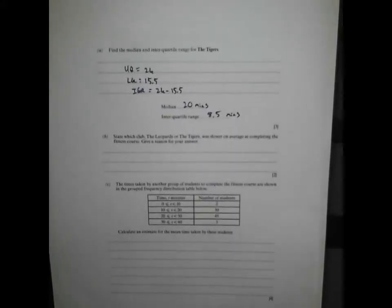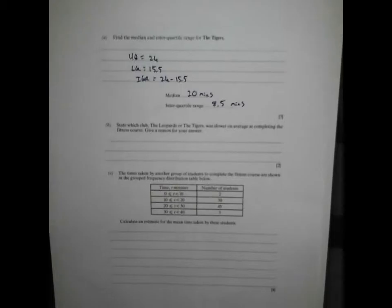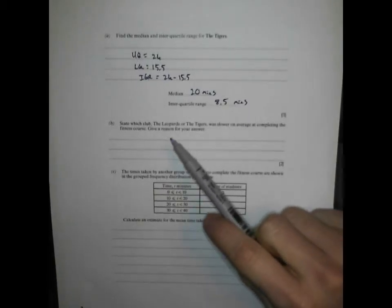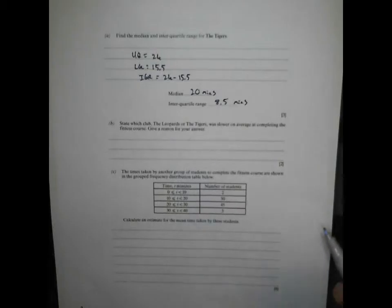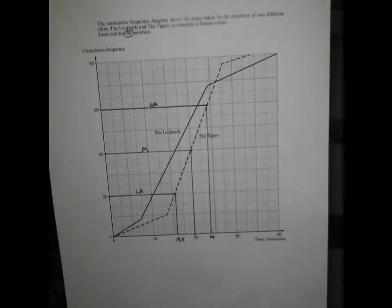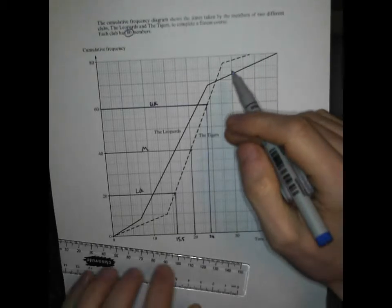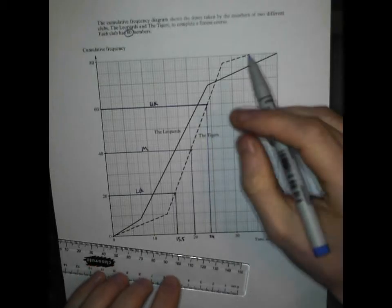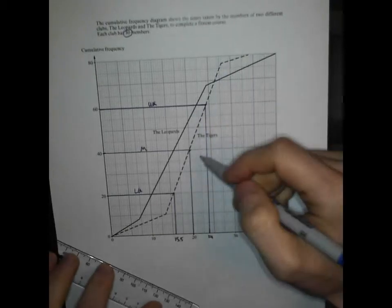This is where we get into twist territory and marks can come tumbling. State which club, the Leopards or the Tigers, was slower on average at completing the fitness course. Give a reason for your answer. If you just write down one of the two, you're going to get zero here. Slower on average means the median.